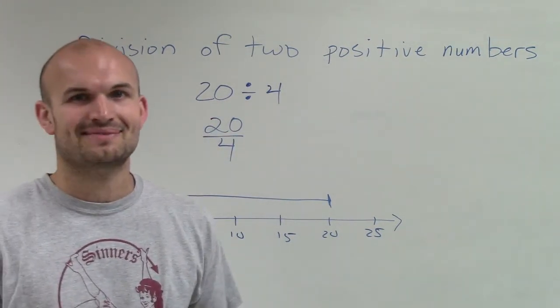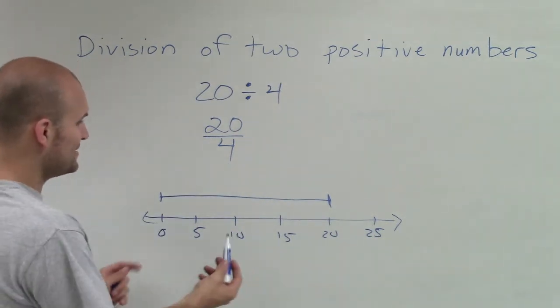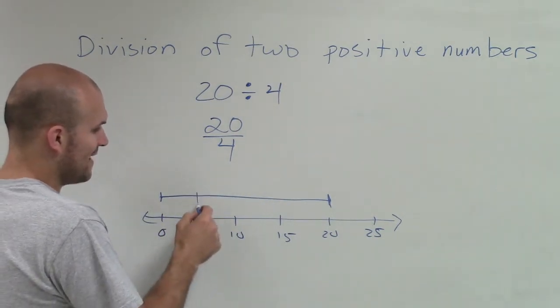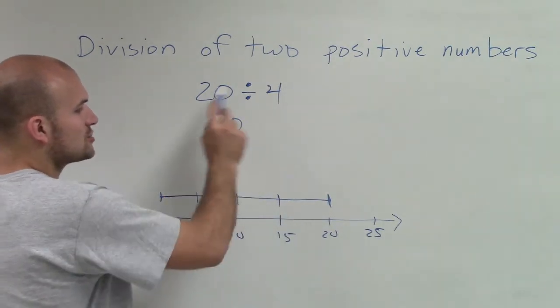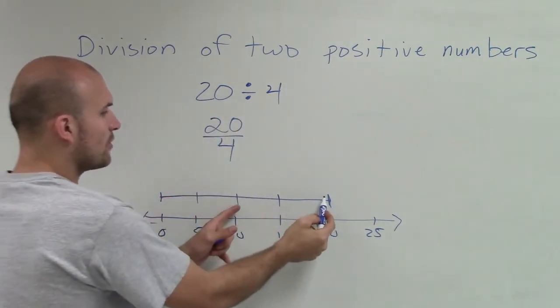Well, I didn't just pick my number line to go by 5s for no reason. What you notice is, if you go by 5s, I end up having 4 equal parts. So 20 broken down into 4 equal parts, that distance equals 5.